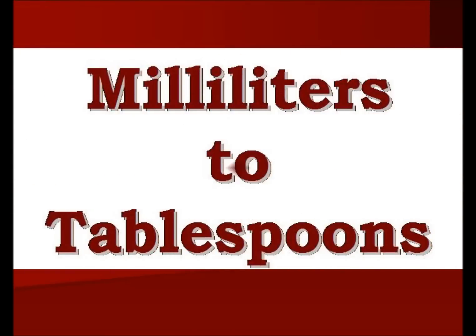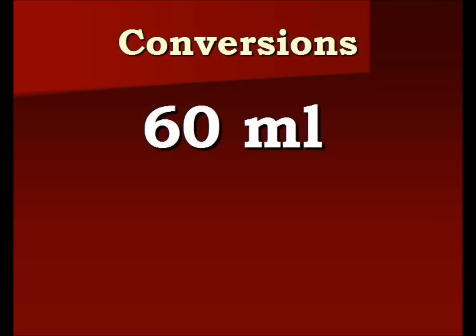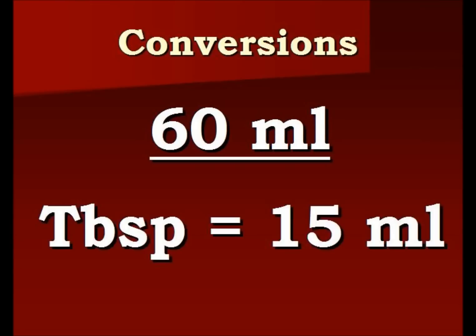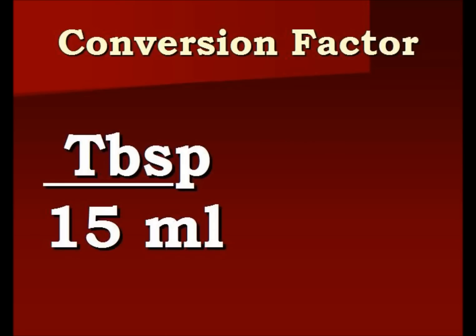Let's go through another example. We have milliliters that we're going to convert to tablespoons. So let's convert 60 milliliters into how many tablespoons. We begin with our 60 milliliters and again we insert our conversion factor. We know that one tablespoon equals 15 milliliters. We're going to put that into a ratio with tablespoons on top this time — remember, this equals one.